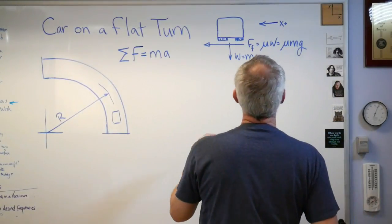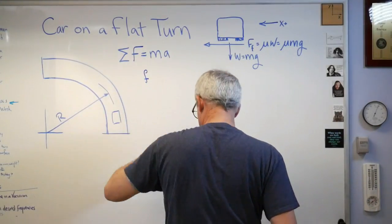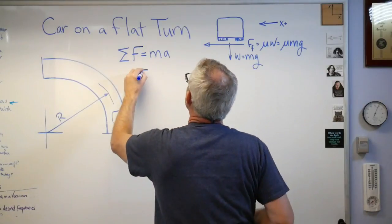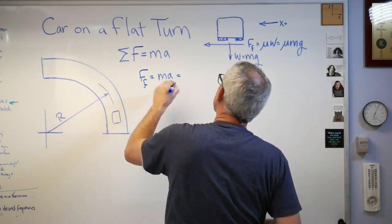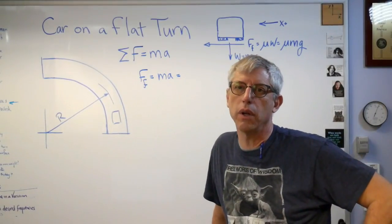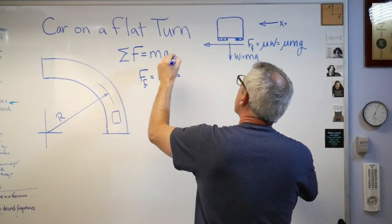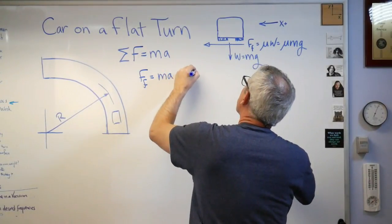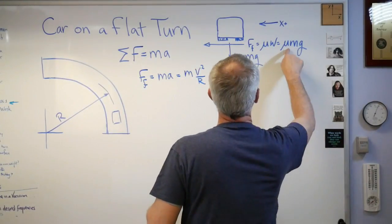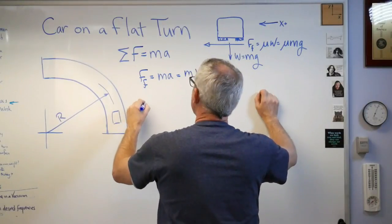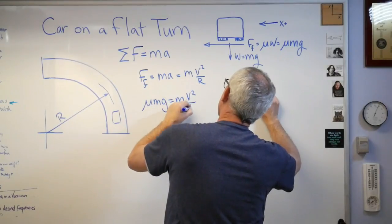My force is in the positive direction now. So if I write this out, I get the friction force equals ma. What's acceleration through a turn? If you're going through a circular turn at a constant velocity, and I'm assuming constant velocity here, the acceleration is v squared over r. So mu mg is mv squared over r.